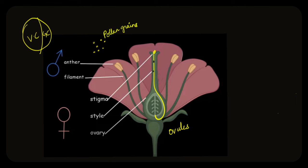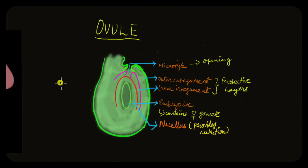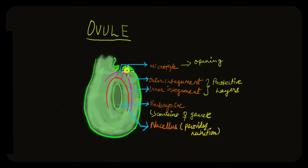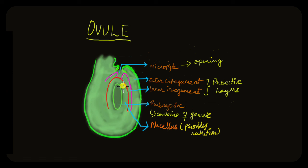What happens when the male gametes reach the ovules? Let's take a look at how a typical ovule looks. The micropyle serves as an opening for the pollen tube to reach inside the ovule. The embryo sac is the actual structure that contains the female gamete. It is immediately surrounded by the nucellus, which provides nutrition to the developing embryo sac. Beyond the nucellus, the embryo sac is covered by two protective layers called the outer and inner integuments.